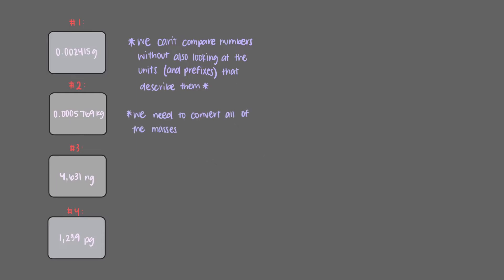So what we need to do is convert all of our masses that are being described using units with different prefixes into a unit with a common prefix. You'll notice that grams has no prefix in front of it, so it might be easiest to convert all of the other masses into grams.